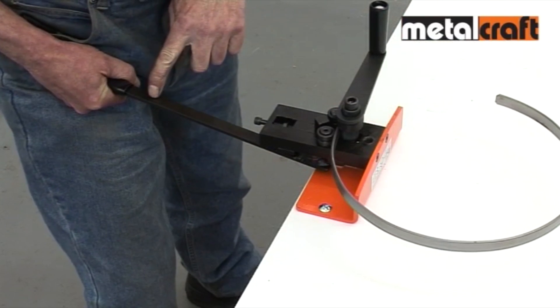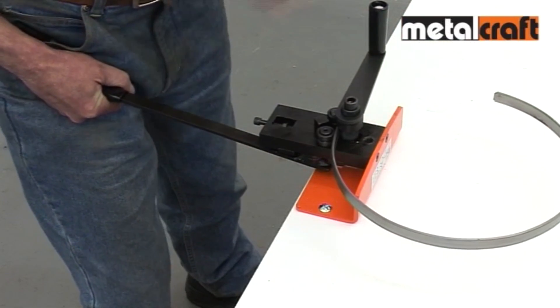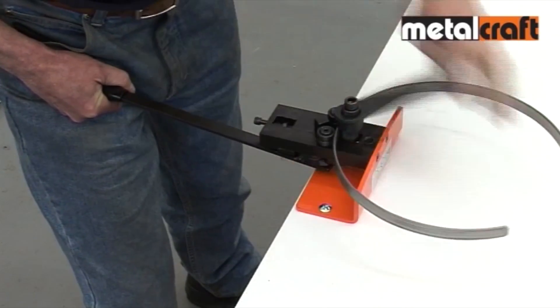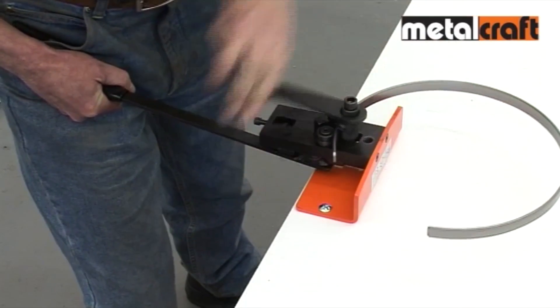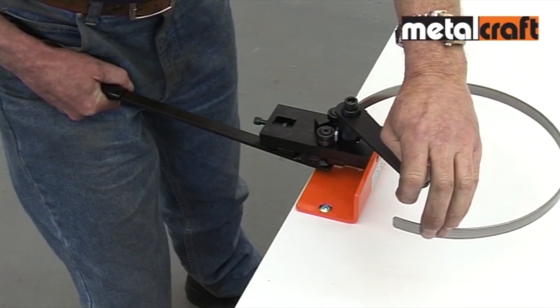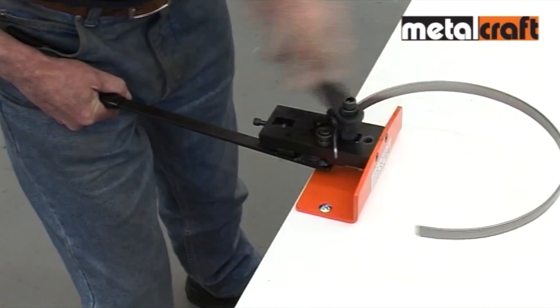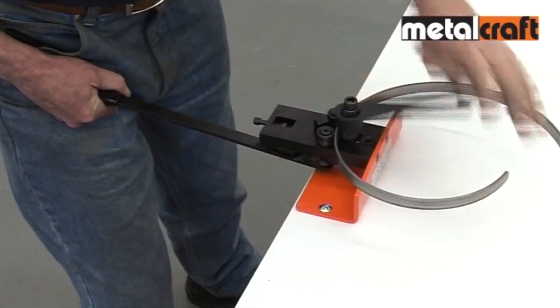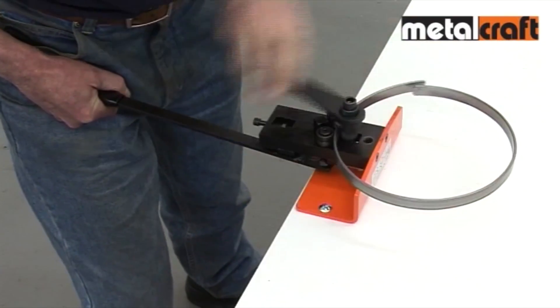Then increase the pressure a bit more and drive the steel strip back to the other way and watch your curve start to take shape. You then repeat this, increasing the pressure on the long handle each time until you achieve your desired curve or circle.